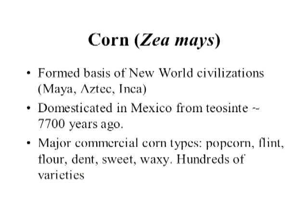Corn, or Zea mays, formed the basis of the so-called New World civilizations across the Americas, including the Maya, the Aztec, the Inca, etc. It's now widely accepted that corn was domesticated in southern Mexico from its ancestor, teosinte, about 7,700 years ago. When Columbus arrived in the Americas, he found more than 300 different varieties of corn already being grown. Today, of course, there are major commercial types including flint, flour, dent, sweet, waxy, and popcorn, plus hundreds of varieties.